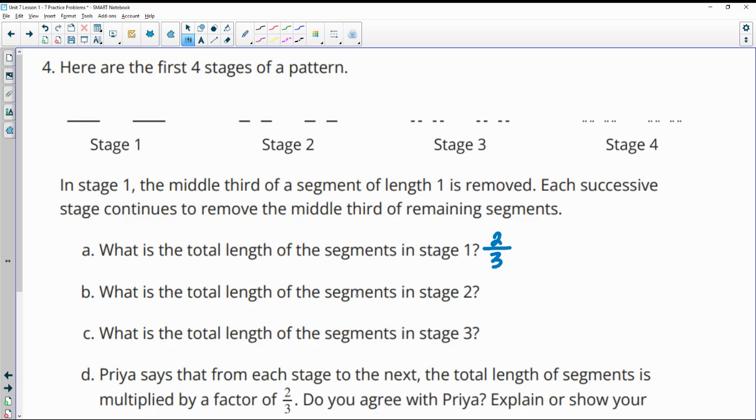So then what's the total of the segments in stage two? So now they've taken a third of this part away. And so then we want to add all of that up. The way I thought about this is this was one third and one third. So now this little piece is a third of this third. So this is a third of a third. So this little chunk is one ninth and there's four of them. So I thought of this as one ninth times four and got four ninths.